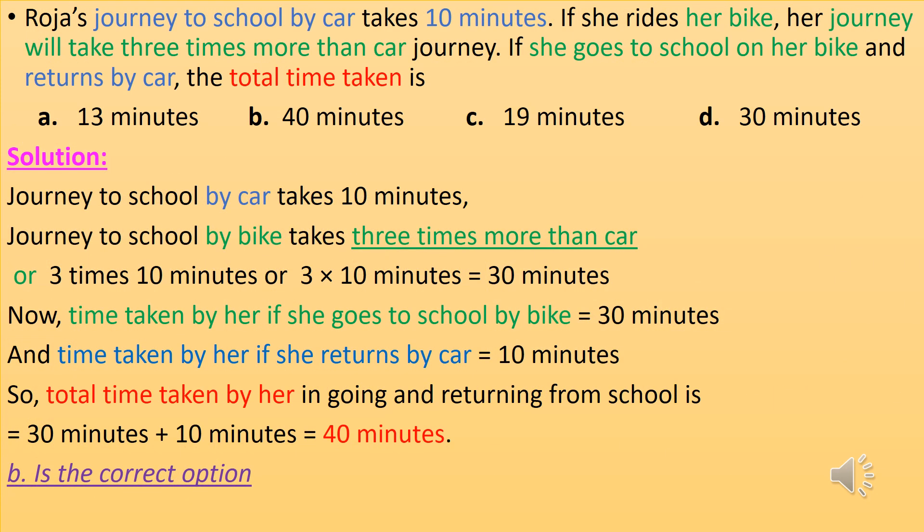Roja's journey to school by car takes 10 minutes. If she rides a bike, her journey will take 3 times more than the car journey. If she goes to school on her bike and returns by car, the total time taken is?